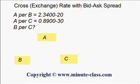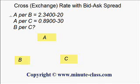For example, they may give you three countries' currencies, A, B, and C. You are given that the exchange rate A per B is 2.34-20, and A per C is 0.8900-30. Then you are asked: what is the B per C rate? The first thing you must remember is the meaning of this expression — A per B means how much of currency A is equivalent to one unit of currency B.